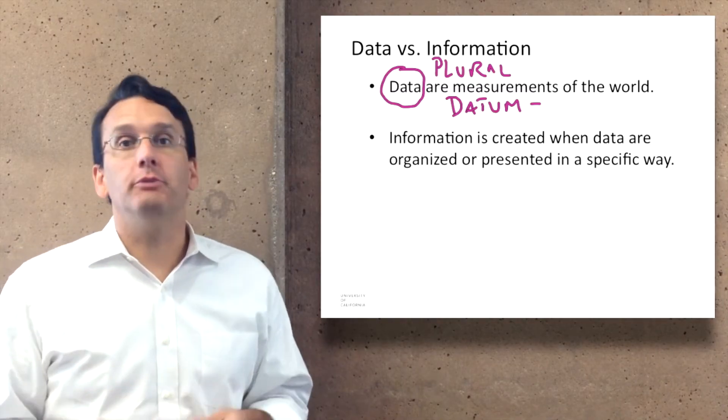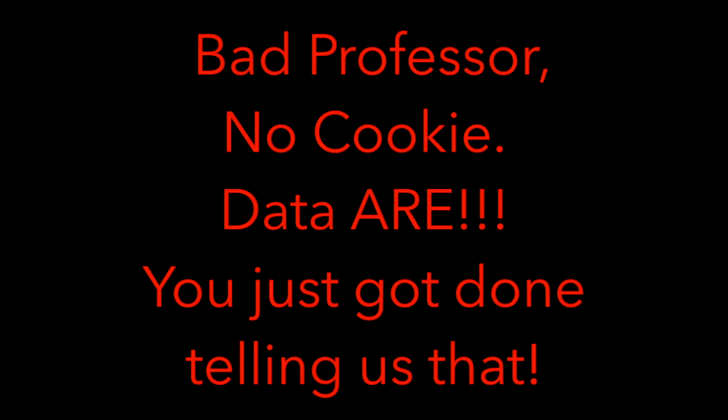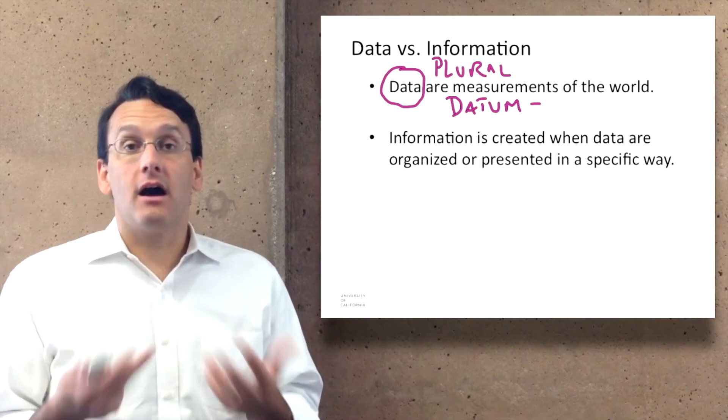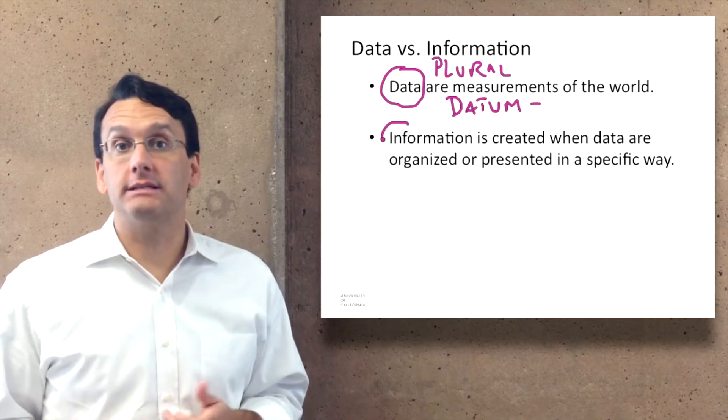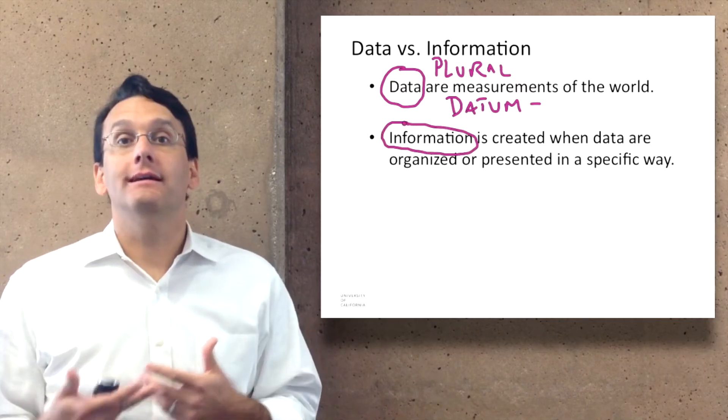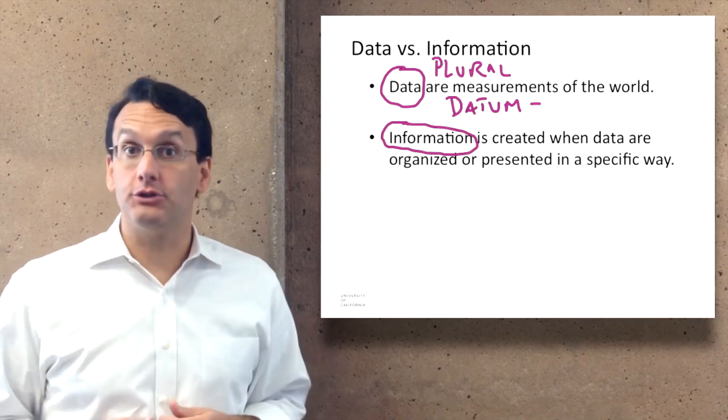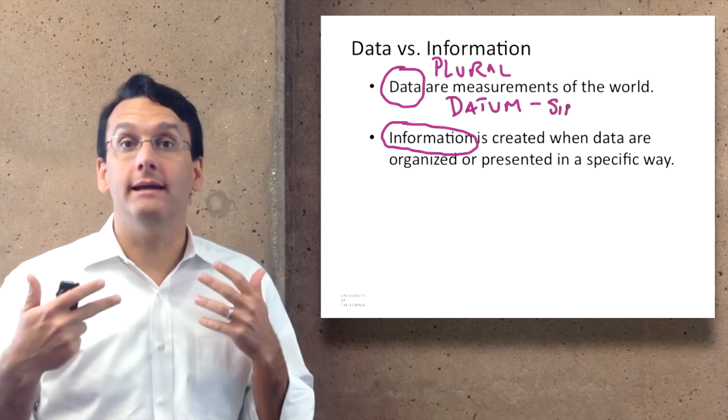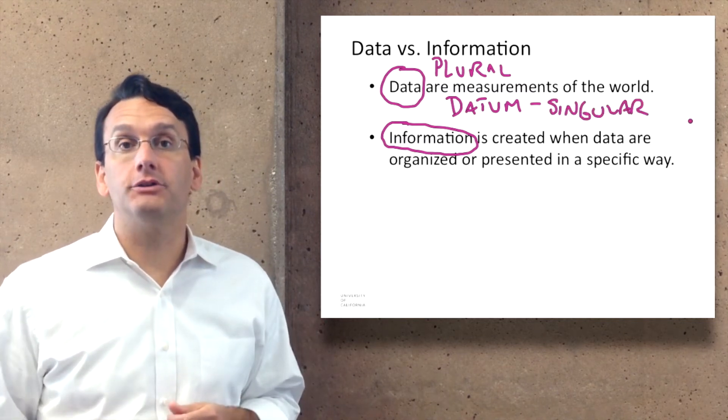This is an important distinction because data is not inherently understandable by people necessarily. But information is something that is designed to be understood by people. It's a collection of data in a way that makes it possible for people to understand it.